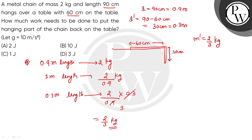Now look at this hanging part — where is the center of mass? The center of gravity of the hanging part is at its midpoint, which is 15 cm from the table. So the distance L'C is 15 cm, which is 0.15 m.